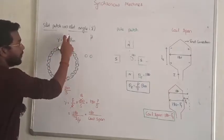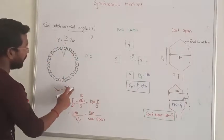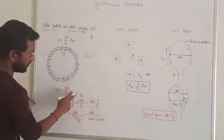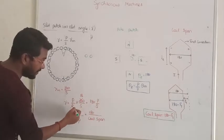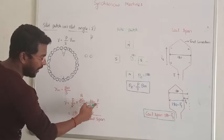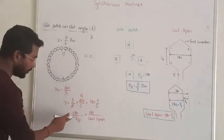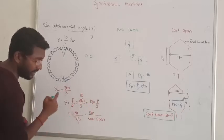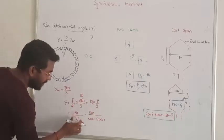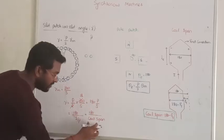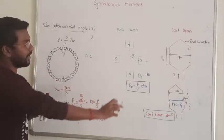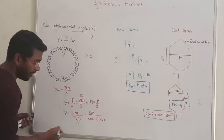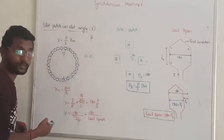In electrical terms, that is P/2 times the mechanical angle. So the mechanical angle is 360/S, and P/2 into the mechanical angle gives 180P/S. Simplifying, this can be written as 180 divided by slots per pole. That number — slots per pole — is known as the coil span. So gamma is equal to 180 divided by the number of slots per pole.